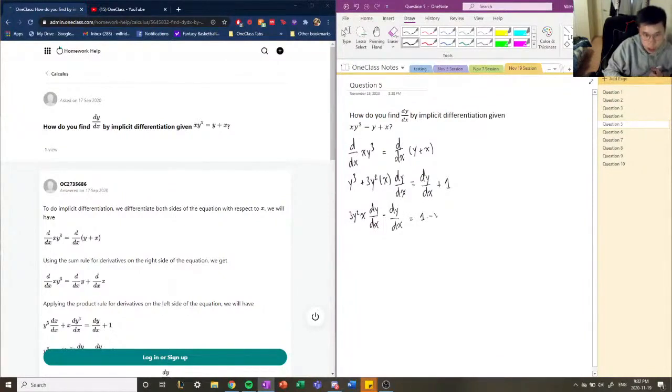And then on this side, we have 1 minus y cubed. So now we're going to factor out dy/dx, which just leaves it with 3y squared x minus 1 equals 1 minus y cubed.